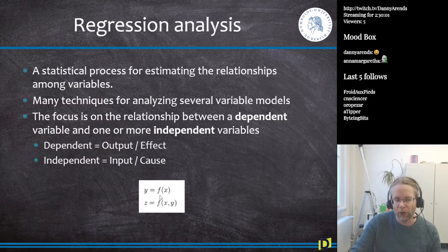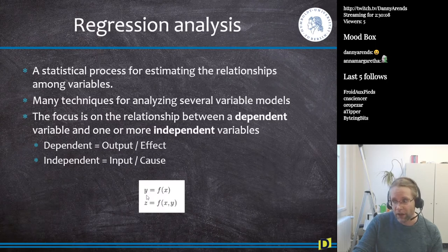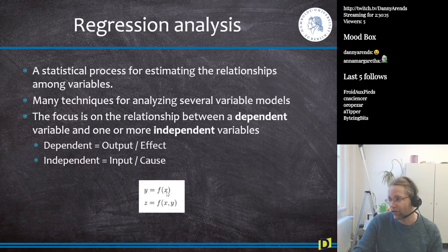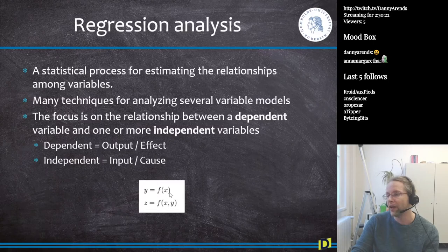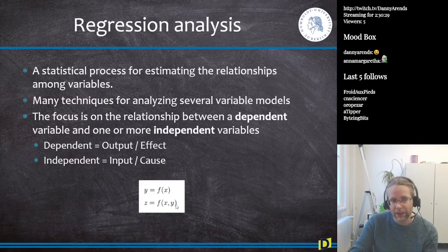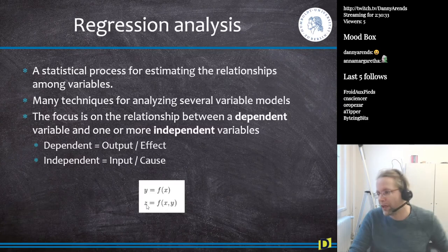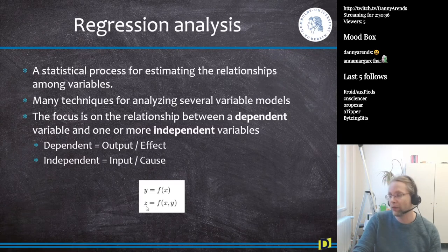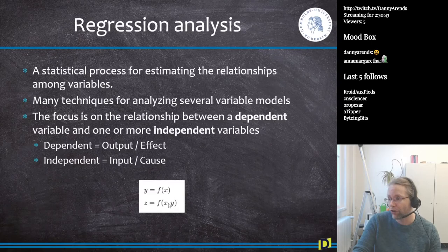If we write this down mathematically, y is the dependent variable we want to predict, and y is given by some function of x, where x is what we are measuring — for example, food intake. Is there a function that couples food intake to the obese phenotype of a mouse? We can also have a more complex function with z as the dependent variable, predicted by food intake plus exercise.